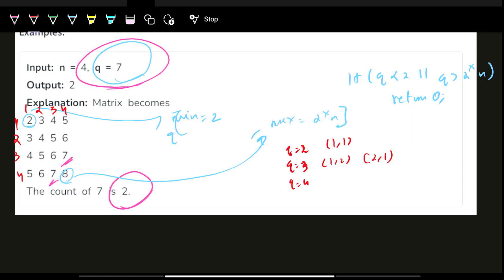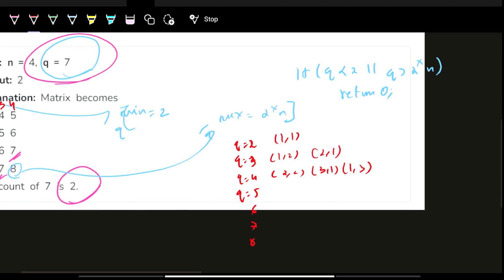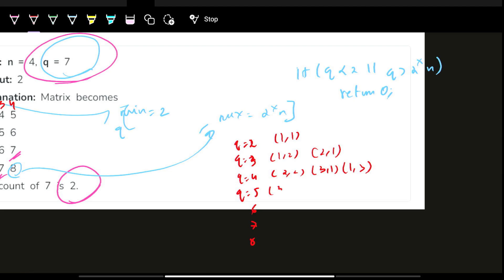Similarly, for Q equals 4, my answer would be (2,2), (3,1) and (1,3). For Q equals 5, 6, 7 and 8, we're going to do a dry run. It is (3,2), (2,3), (1,4) and (4,1). Similarly, for 6: (3,3), (2,4), (4,2) and that's it.